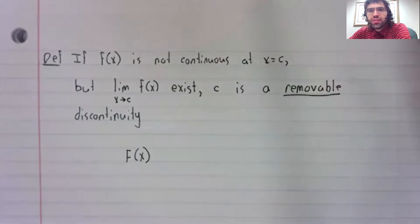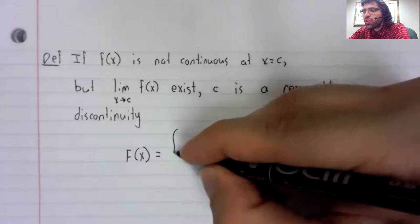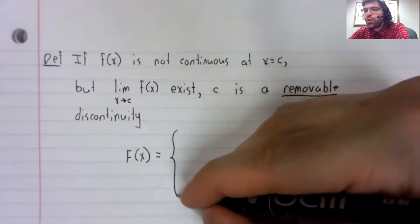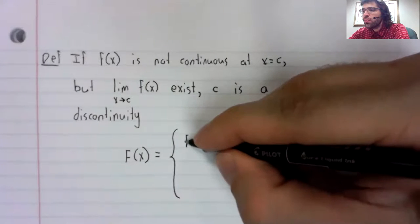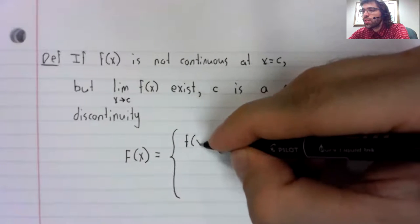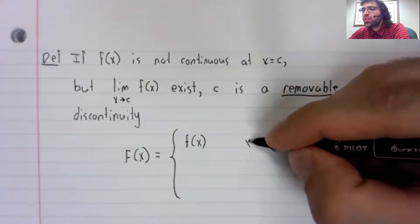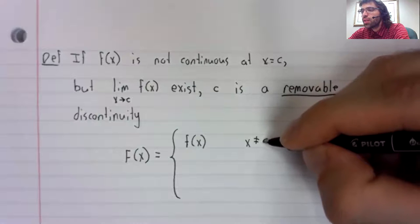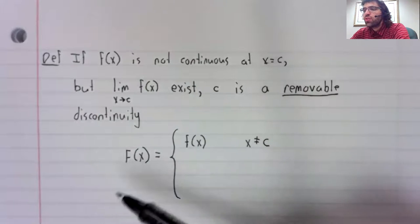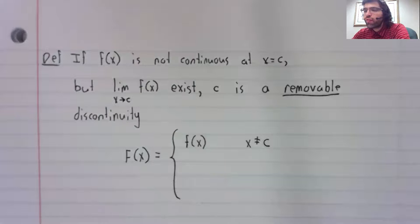but is continuous at c. In particular, you define a piecewise defined function. Everywhere except at the discontinuity, this new function is just going to be the old function.